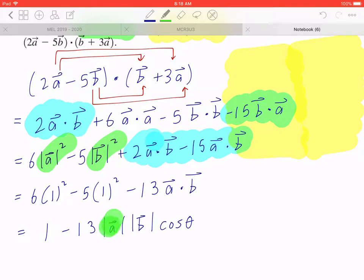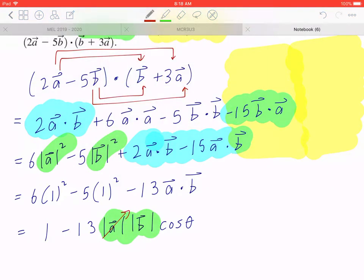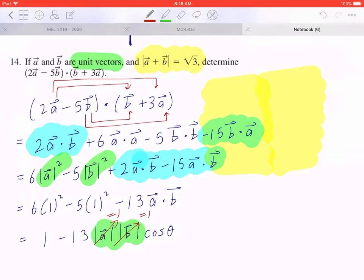Again, because a and b are unit vectors, these two terms will become 1. Now, the missing value is the angle theta. So this is where we're going to go back to the given, and we're going to find that missing angle.